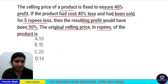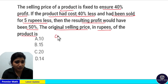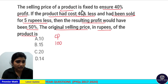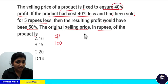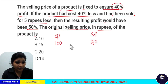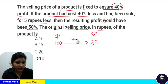If we consider the cost price of this product as 100 rupees, then the selling price fixed to ensure 40% profit means the selling price must be 100 plus 40 equals 140 rupees, because profit here is equal to 40%.